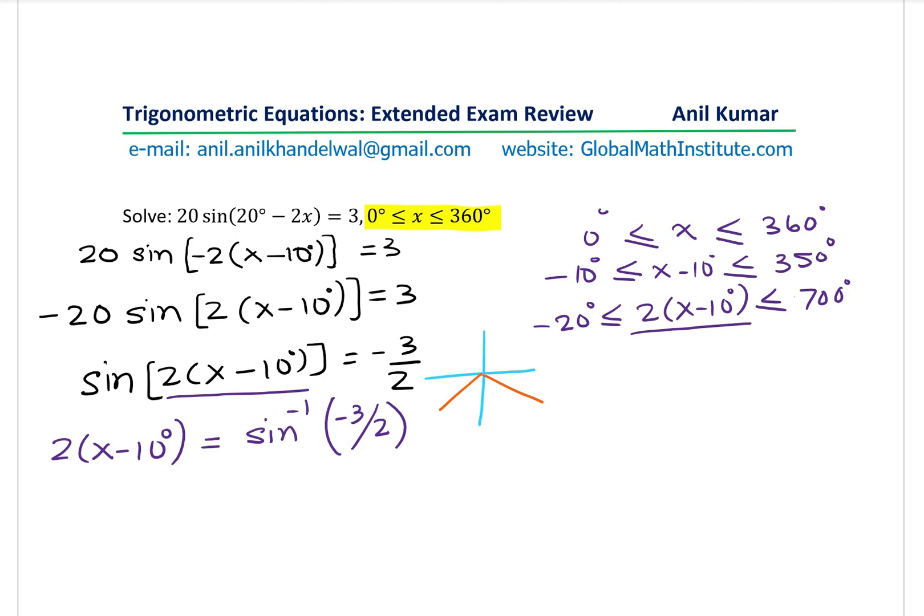So we'll do the sine inverse of 3 divided by 20. And that gives you minus 8.627. So one answer which we get here is minus 8.6269. That is one of the answers which we get. Now, minus 8.6269 is within our domain, so that is perfectly fine.